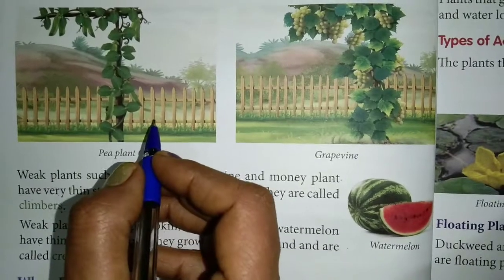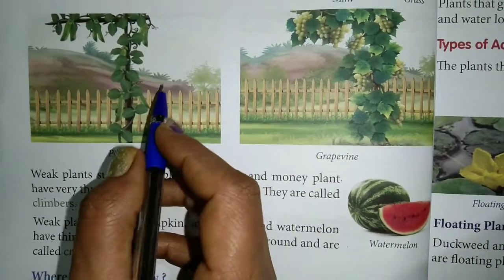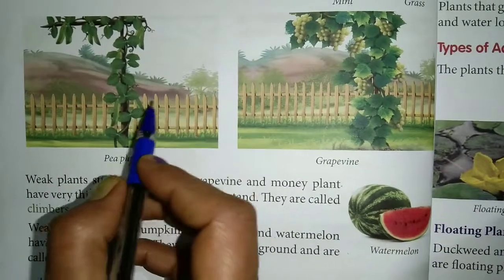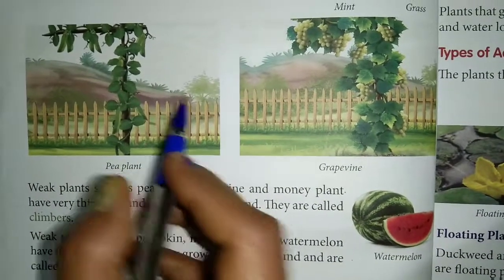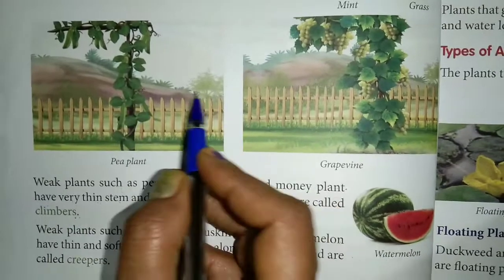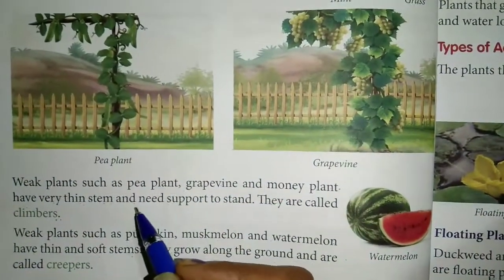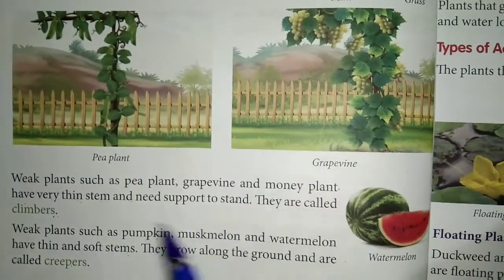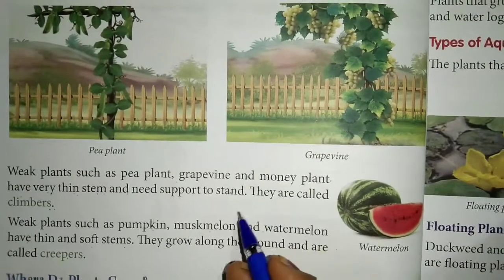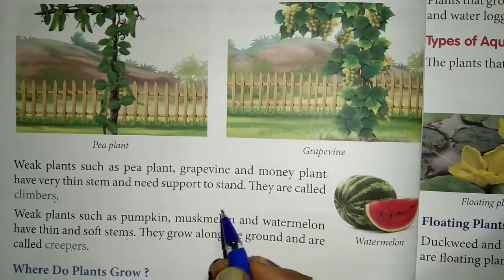Some plants need support for growth because their stem is weak, like pea plants and grapevine — this type of plant is called climbers. Some plants grow along the ground, like watermelon, pumpkin and muskmelon — this type of plant is called creepers.